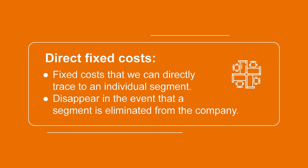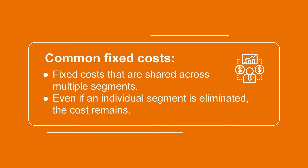Direct fixed costs disappear in the event that a segment is eliminated from the company. Common fixed costs, on the other hand, are fixed costs that are shared across multiple segments. These costs relate to the overall operation of the company. In the event that an individual segment was eliminated, these common fixed costs would remain constant. For example, the CEO's salary would be considered a common fixed cost, because even if one individual division shut down, since the CEO oversees all of the divisions, their salary would likely remain intact.